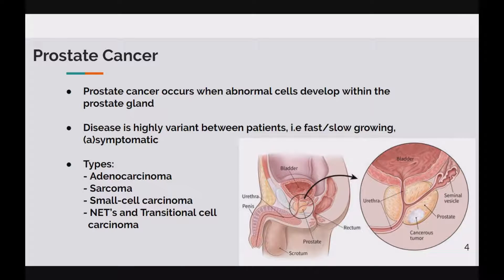Prostate cancer occurs when abnormal cells develop within the prostate gland. The mechanisms for how this can occur are unknown. However, most prostatic cancers are adenocarcinomas as they arise from cells that line the prostate gland itself. There are other types of cells within the prostate which can cause prostate cancers, called sarcoma, small cell carcinomas, neuroendocrine tumours and transitional cell carcinomas. However, these are all extremely rare in comparison.